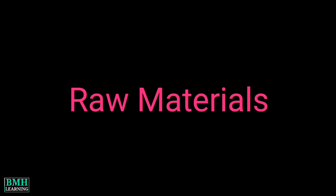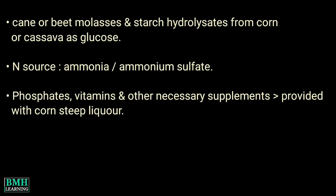Raw materials: The main raw materials used are cane or beet molasses and starch hydrolysates from corn or cassava as glucose. As a nitrogen source, inorganic sources such as ammonia or ammonium sulphate are generally used. Phosphates, vitamins, and other necessary supplements are usually provided with corn steep liquor.